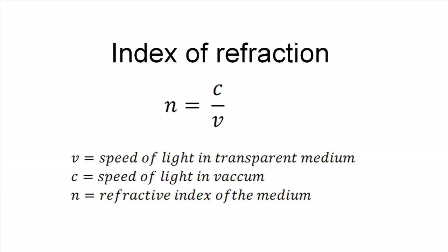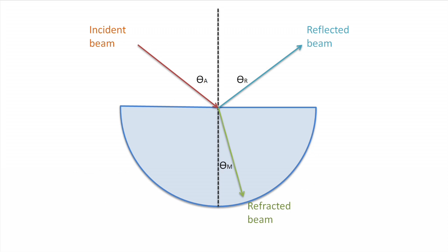This behavior depends upon index of refraction of the medium, which is defined as the ratio of speed of light in the vacuum to the speed of light in the medium. The denser the medium, the higher the refractive index and the slower the light travels through it.